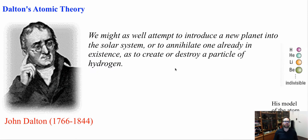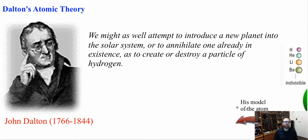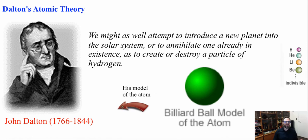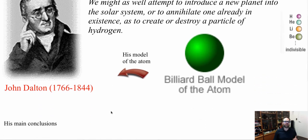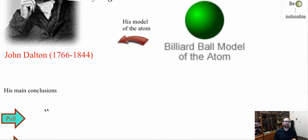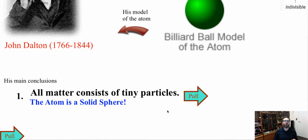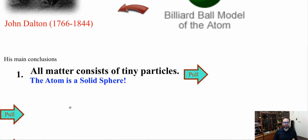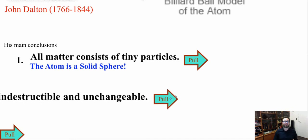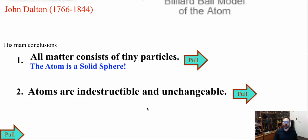Our story on atomic theory starts with John Dalton, who once said: 'We might as well attempt to introduce a new planet into the solar system, or to annihilate one already in existence, as to create or destroy a particle of hydrogen.' So he came up with the billiard ball model. In his model, all matter consists of tiny particles and the atom is a solid sphere — the smallest particle being the atom. He also said that atoms are indestructible and unchangeable.